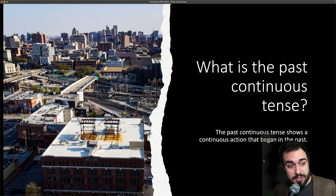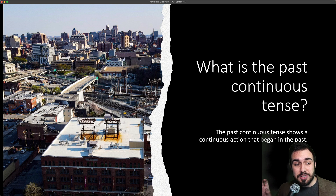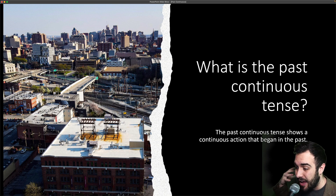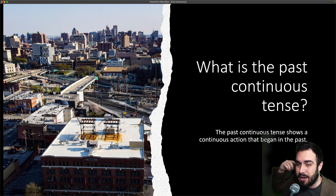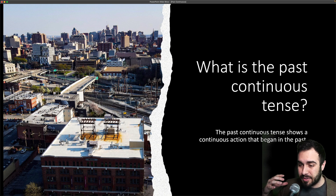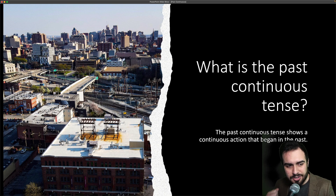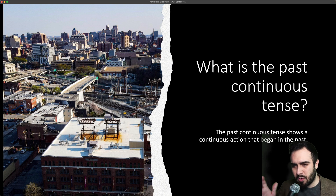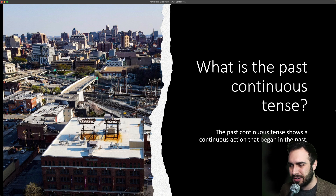So what is the continuous tense? The past continuous tense shows a continuous action that began in the past — algo que estabas haciendo en el pasado, pero continuosamente. I was cooking. I was walking. You were running. You don't want to say 'you were run' or 'I was run.' You want to say 'I was running.'